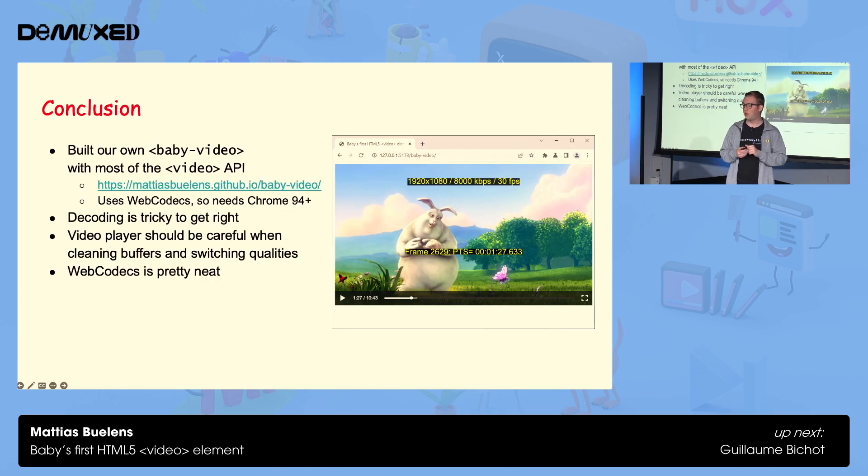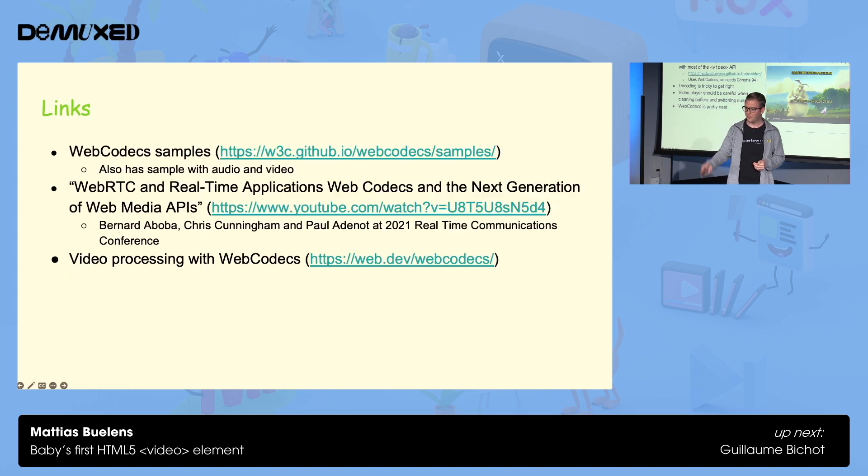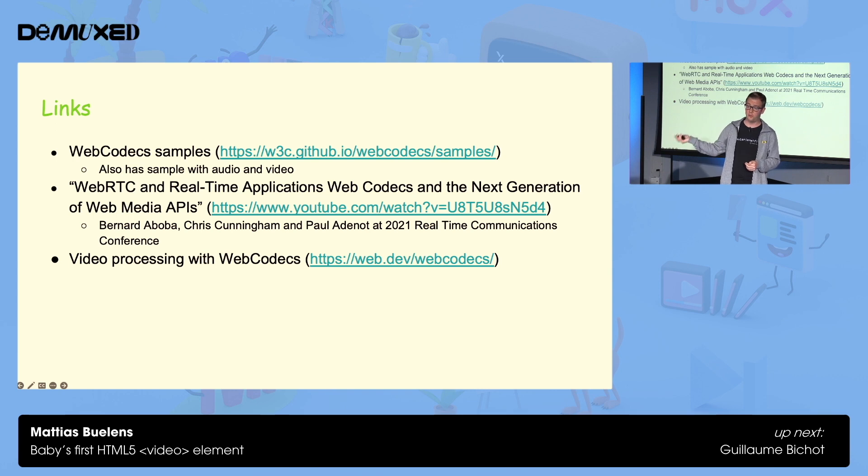So there we have it. We've built our own video element with most of the video API in place. We can play streaming video. You can try this out yourself in Chrome today. Link is on the screen. This uses web codecs, so you need a modern version of Chrome for this. We learned on the way that decoding is quite tricky to get right, and that the video player needs to be very careful when it's cleaning its buffer and switching qualities. Web codecs is also a pretty neat API. Like, this is the first project I used it in, and it works quite well for its use case. I hope it catches on in other browsers, so we can do more cool stuff with this. Couple of links if you can't get enough of web codecs like me, and that'll be all from me. Thank you.